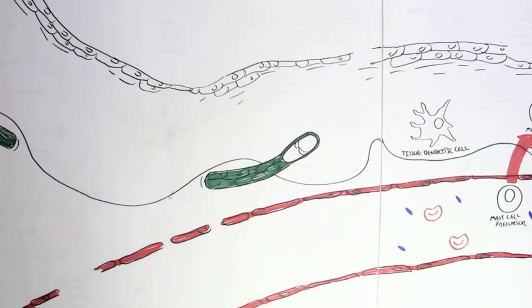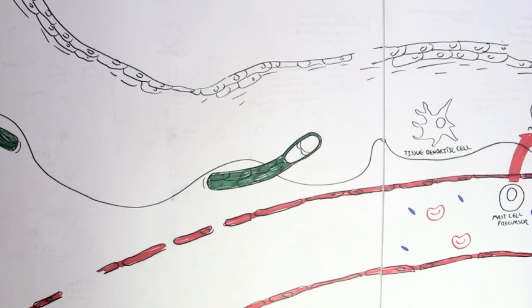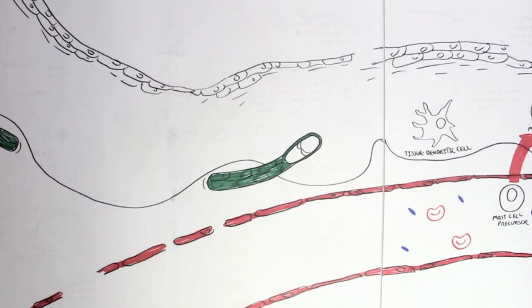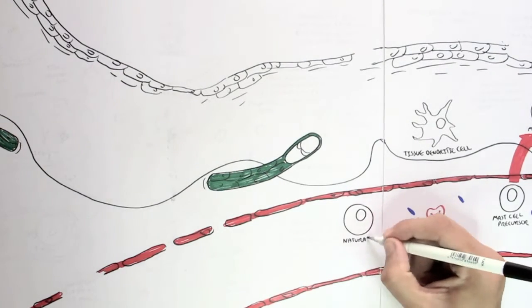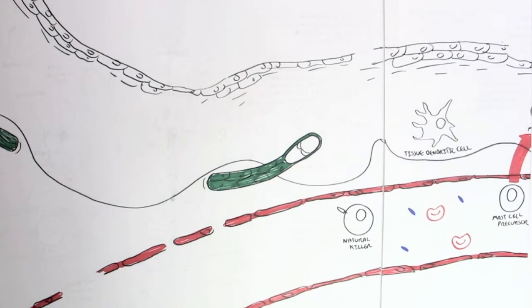Now continuing on, if we follow the blood vessel and the tissues above it, we can see many other types of things. We see erythrocytes and complement proteins circulating the bloodstream and all other types of leukocytes, such as this natural killer cell.